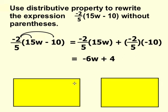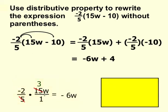If you're having difficulty with how we got to those two terms, go ahead and take a look at this. Negative 2 fifths times 15w over 1, notice you can cross cancel. 5 goes into 15 three times. So negative 2 times 3 gives you a product of negative 6w.